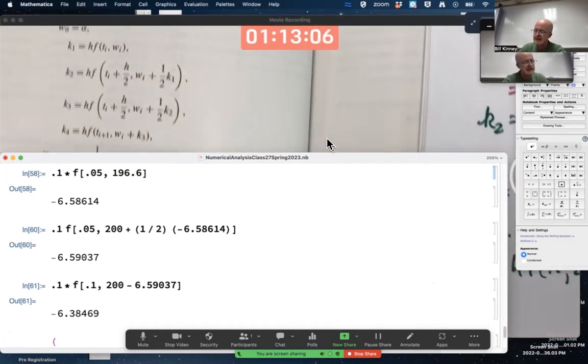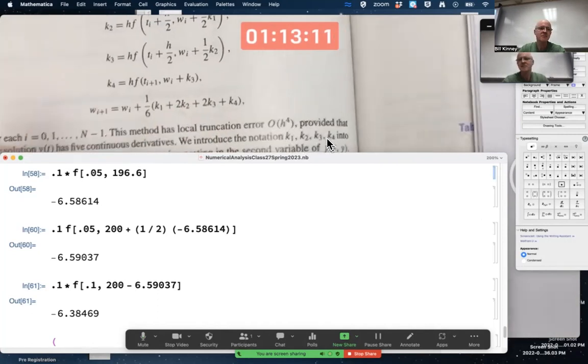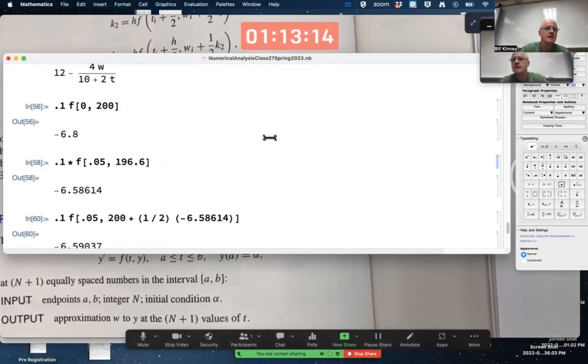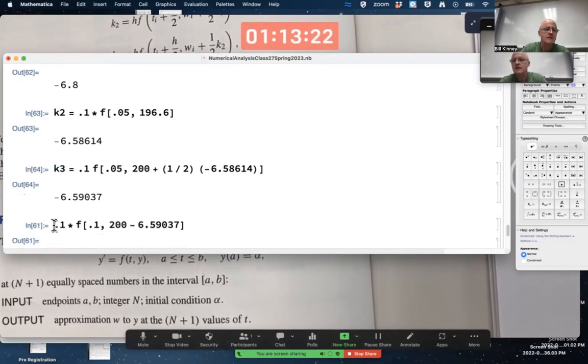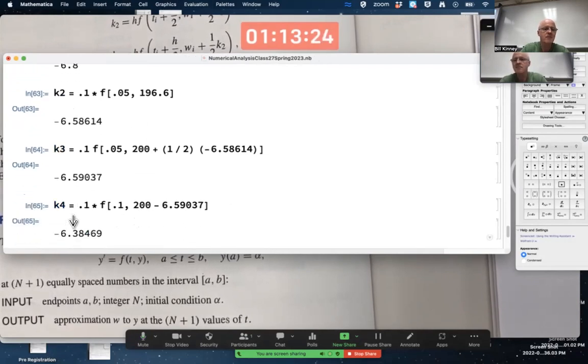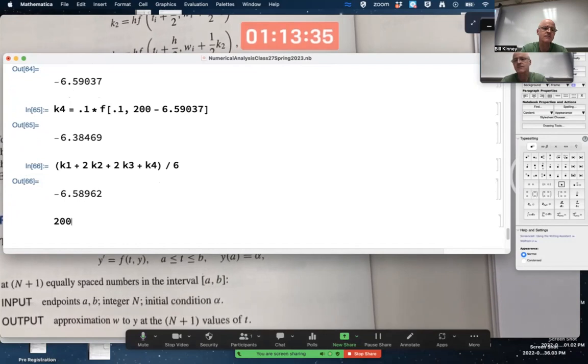Now we've got to do the weighted average of these things. Maybe I want to give these things names in Mathematica. This is K1, this is K2, this is K3, this is K4. I do the weighted average: K1 plus 2K2 plus 2K3 plus K4 divided by 6. That's what gets added to 200 to get my approximation to the solution at time equals 0.1.